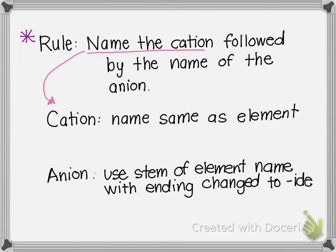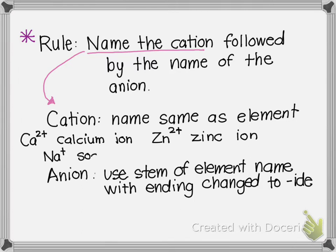So for example, a calcium two plus is called a calcium ion. And even a transition metal like zinc that forms a two plus would be called a zinc ion. A sodium ion would be called a sodium ion.